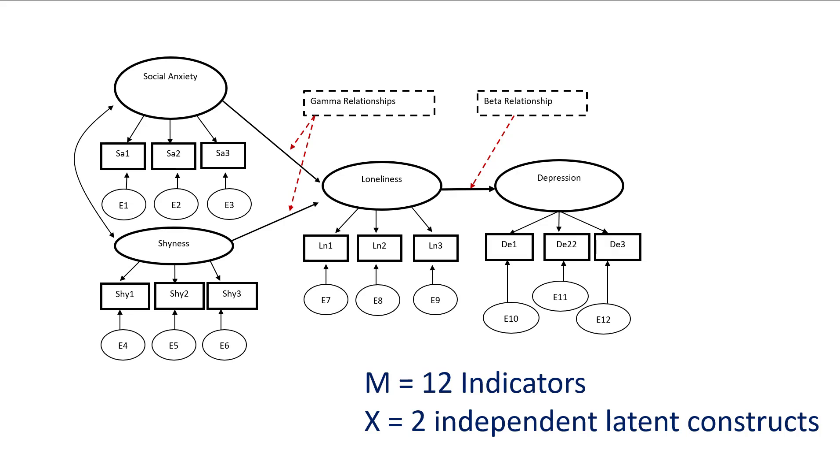From a formula perspective, our m is 12 indicators—four constructs, three measures each. And we have two independent latent constructs. Again, we're not considering all the constructs independent and dependent, just the independent ones.